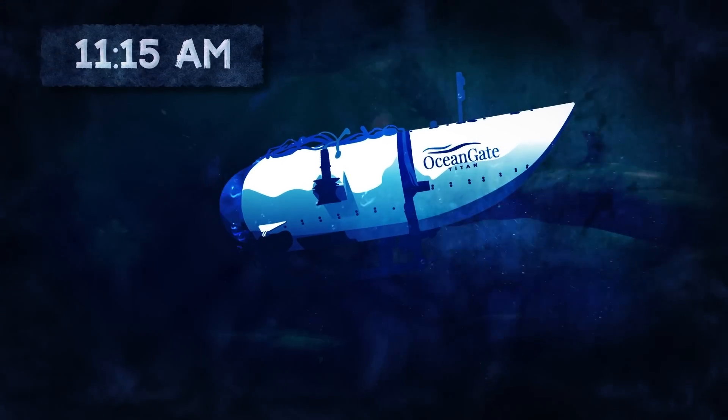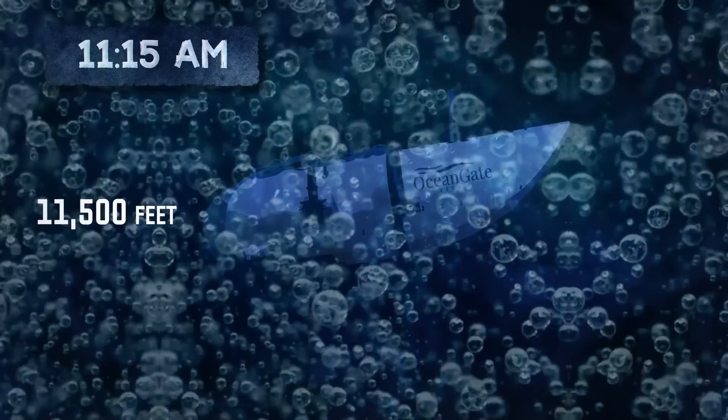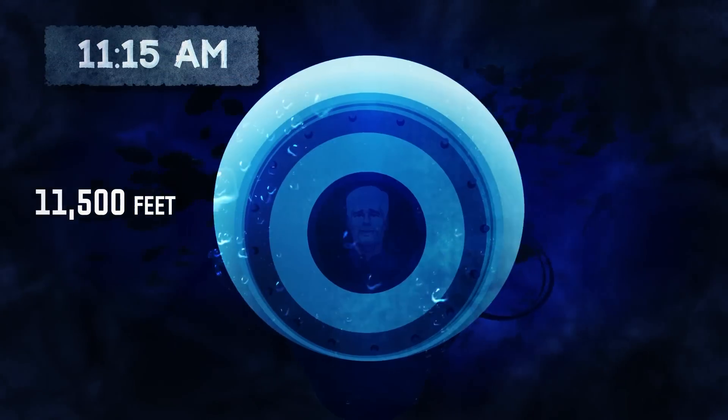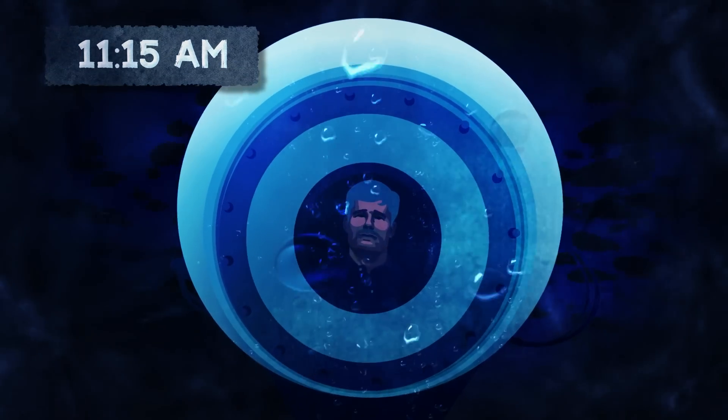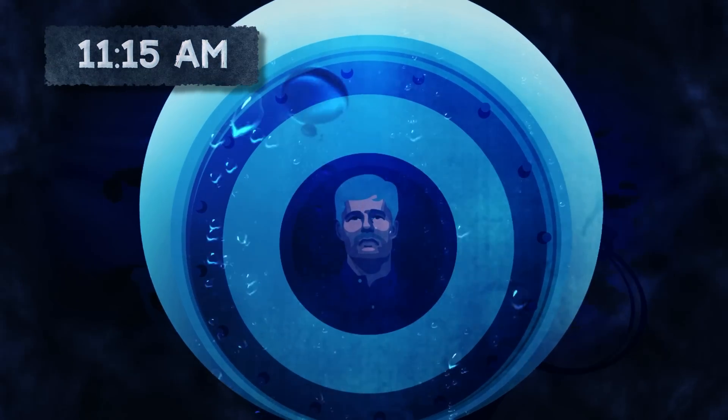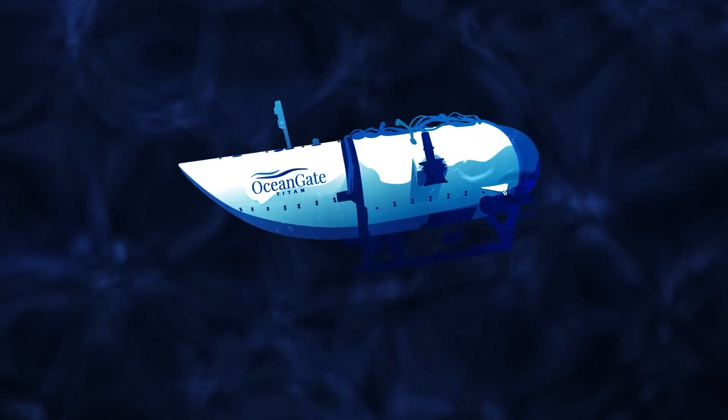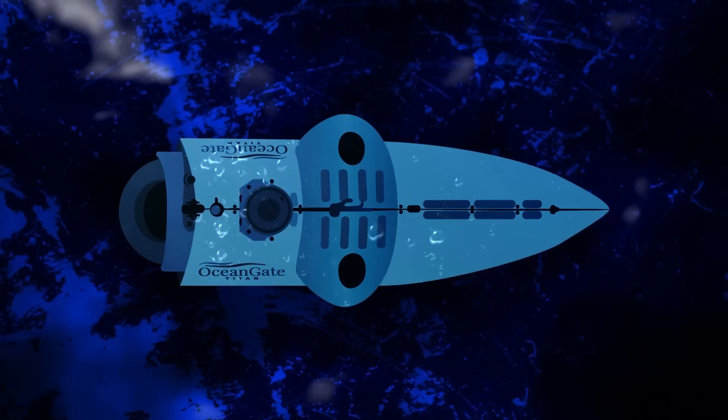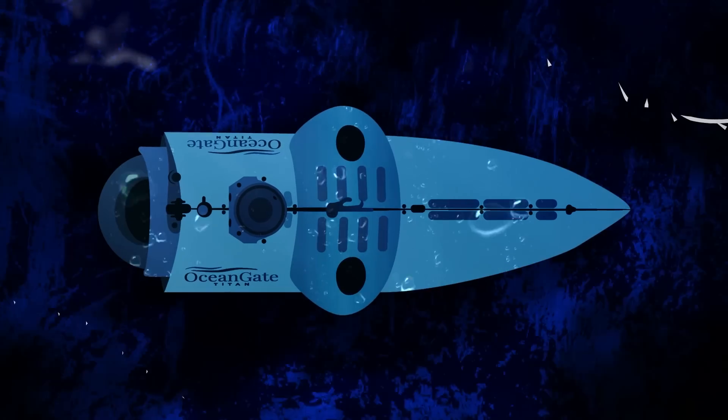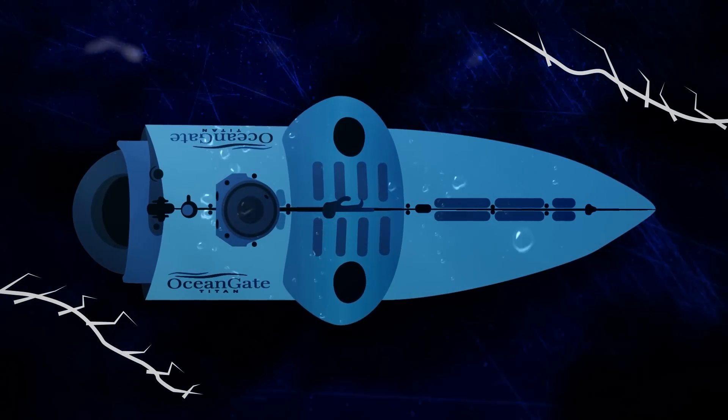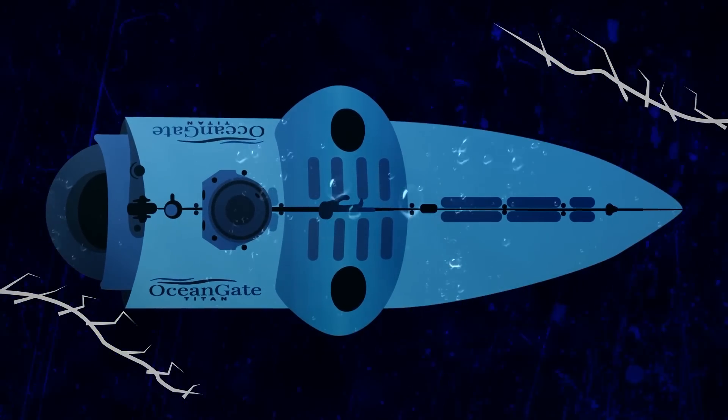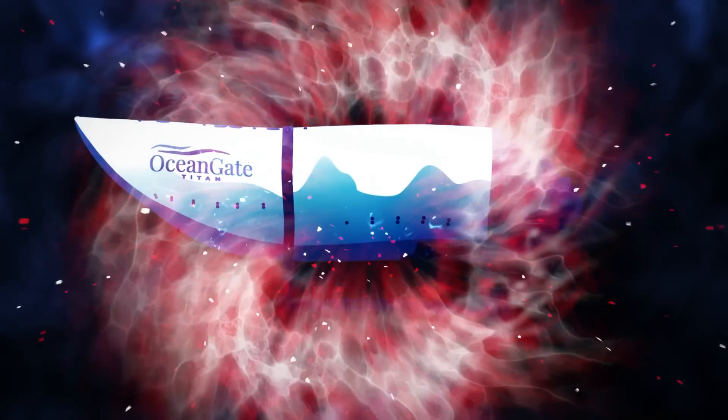At around 11:15 am, when they've reached the depth of 11,500 feet, something happens. We don't know what exactly, but Stockton decides to abort the dive. He drops the ballast and sends the Titan back to the surface. We're waiting for the investigation to confirm this, but the most plausible scenario is that they heard a cracking sound. It was the carbon fiber hull failing under pressure. Seconds later, the vessel implodes.